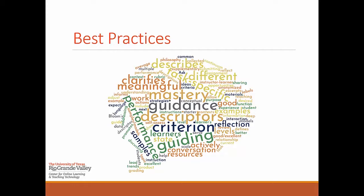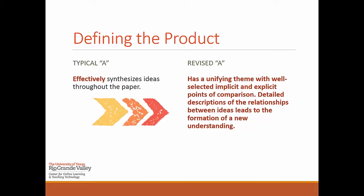So how do we ensure we are clearly defining each criterion? Let's take a look at these two examples. On the left we have a typical descriptor: "Effectively synthesizes ideas throughout the paper." That may be enough description for you as you assess work, but do your students understand what you mean by "effectively"? If we take qualifiers and analyze them, we'll have a better understanding of what we're looking for.